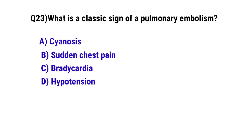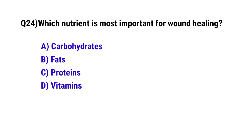Question number 23. What is a classic sign of pulmonary embolism? The correct option is B. Sudden chest pain. Question number 24. Which nutrient is most important for wound healing? The correct option is C. Proteins.